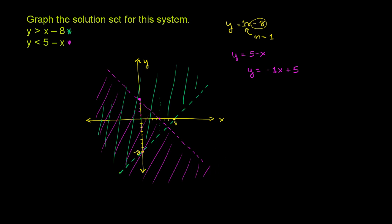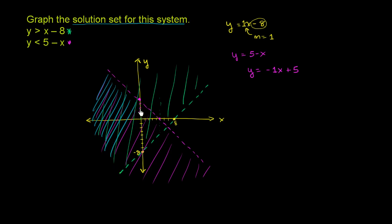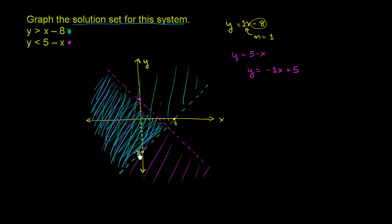The solution set for this system is all the coordinates that satisfy both inequalities. The region shaded in purple satisfies the second inequality, and the region shaded in green satisfies the first. The overlap — where they both apply — is the solution set. It's the region below the magenta dotted line and above the green line, where the two regions overlap. The boundary lines themselves are not included.